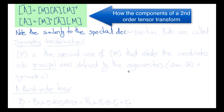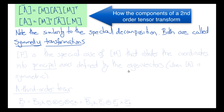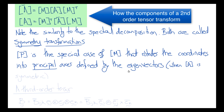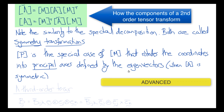We've actually seen a transformation of this kind before — this is the same form as the spectral decomposition. Transformations of this kind are called similarity transformations. One of the properties of this type of transformation is that it always preserves the symmetry of the matrix: if A is symmetric then A_bar will be symmetric, and vice versa. In the spectral decomposition, the matrix P whose columns are the eigenvectors is a special case of M — it is the orthogonal matrix that rotates the coordinates into principal axes defined by the eigenvectors, provided that tensor A is symmetric.